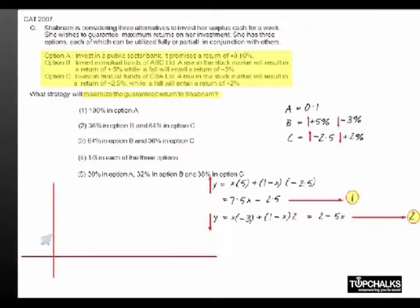If I draw the graph of Y equals 7.5X minus 2.5, it is an increasing graph. At X equals 0 you will find it is at minus 2.5, and it continuously increases and cuts your X axis at X equals 1 by 3.